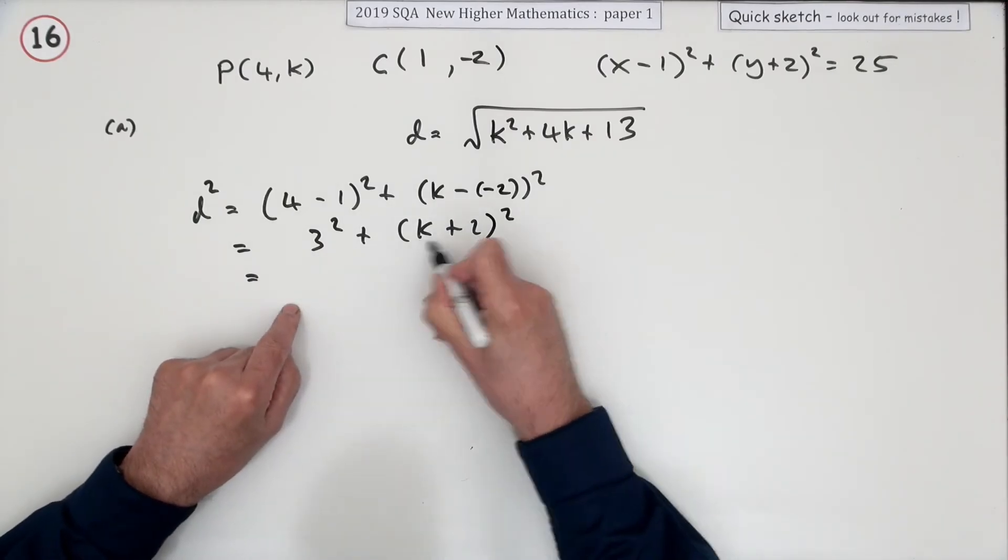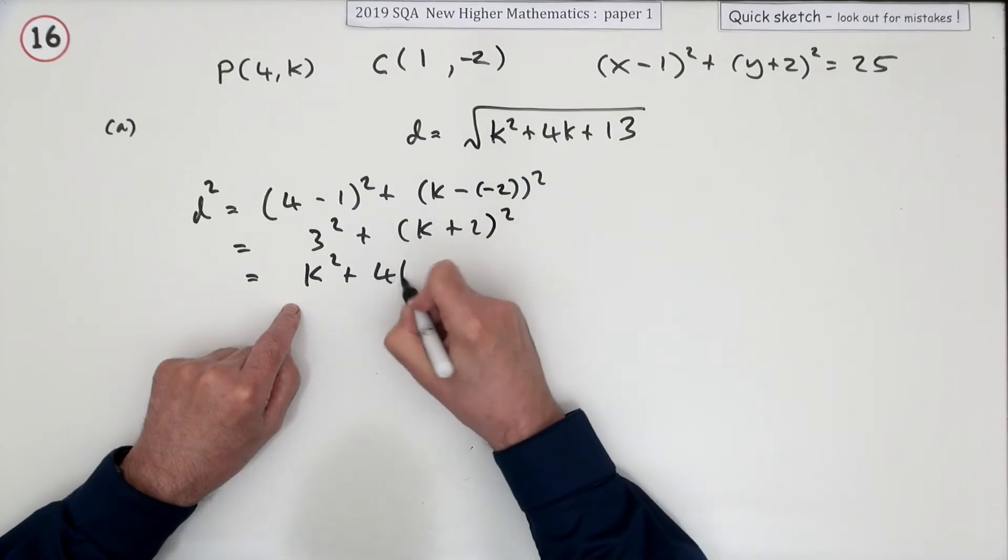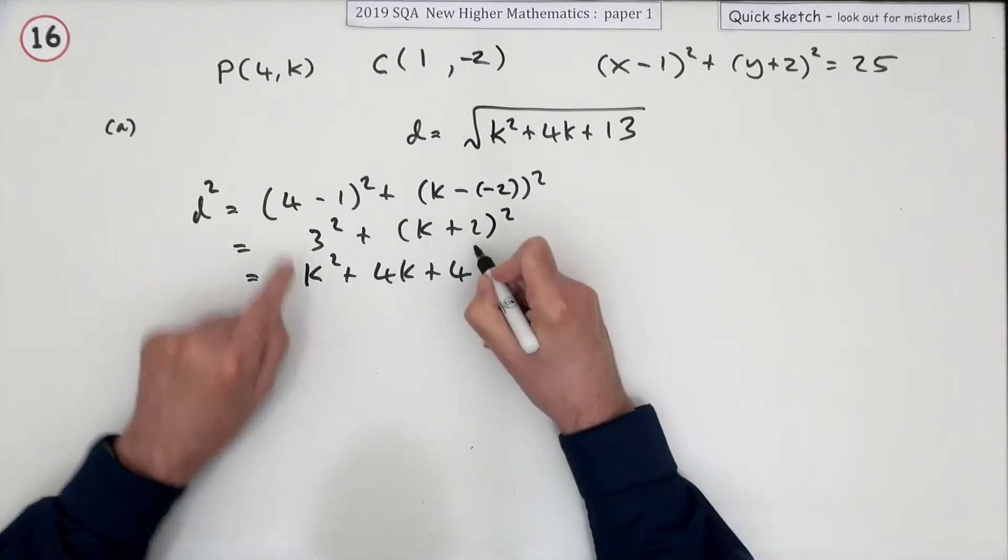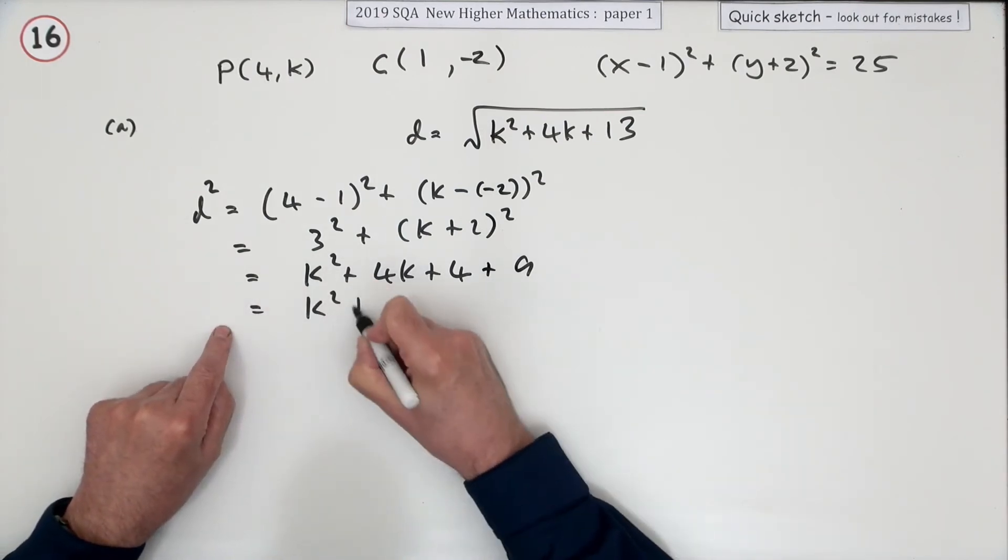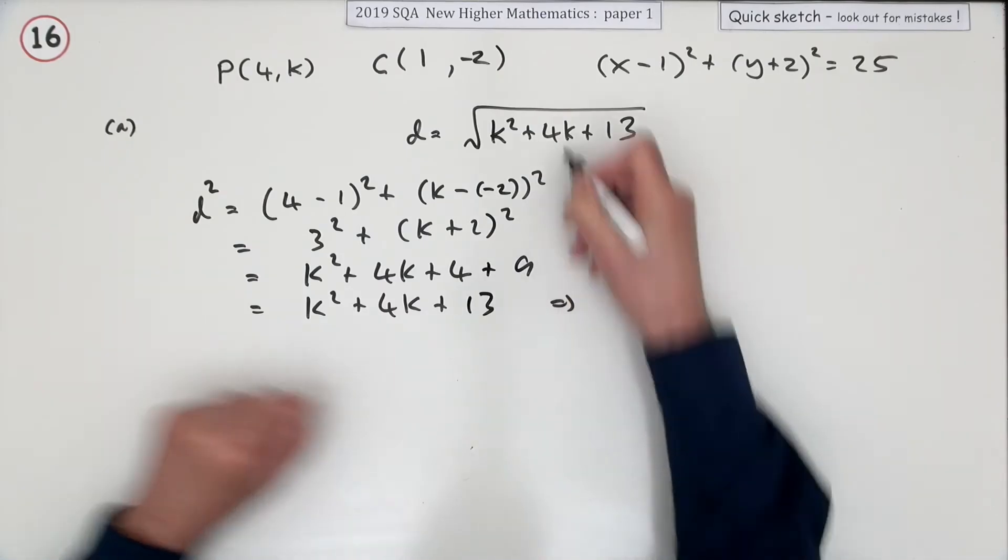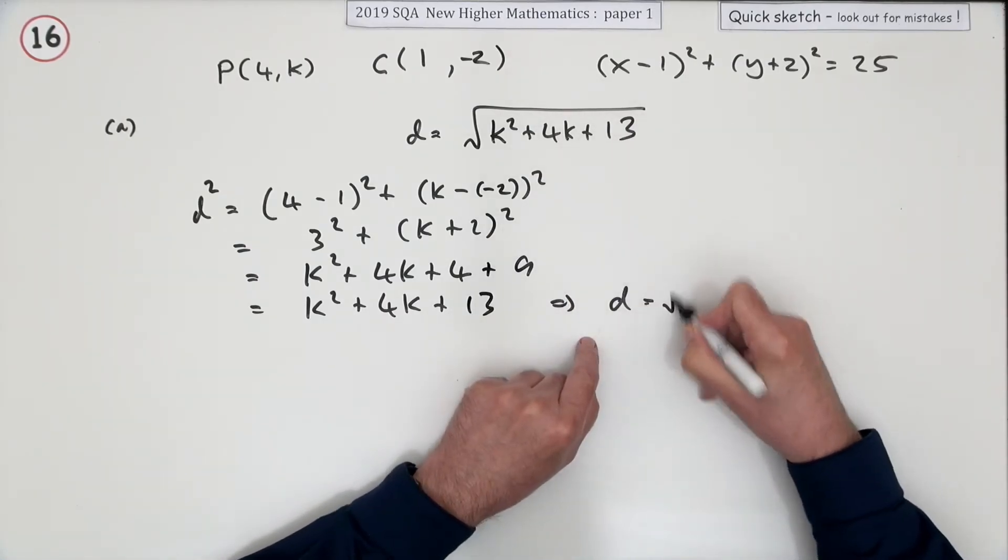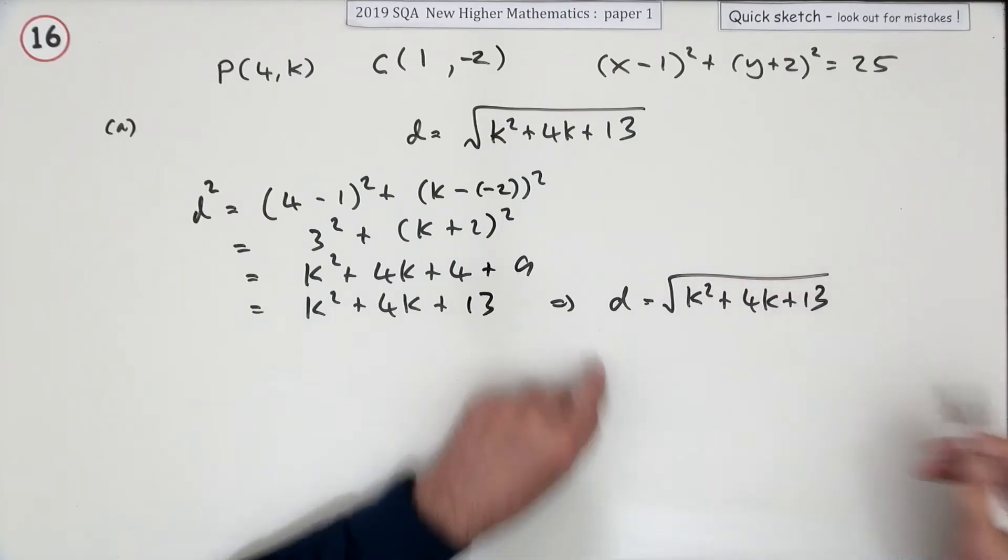Then, square the bracket: square the first K squared, twice the product 2K doubled 4K, square the last 4, plus the 9. So that gives you K squared plus 4K plus 13. But I have to write it in that form though, so that means the distance is the square root of K squared plus 4K plus 13.